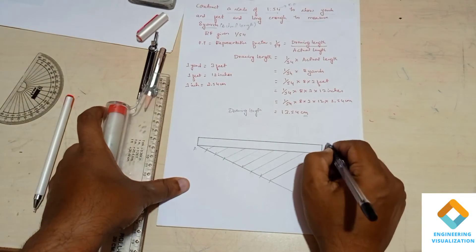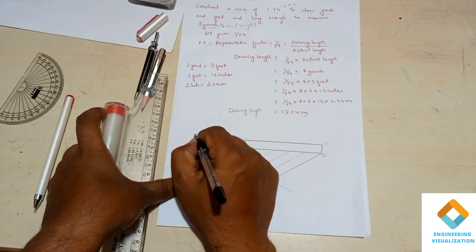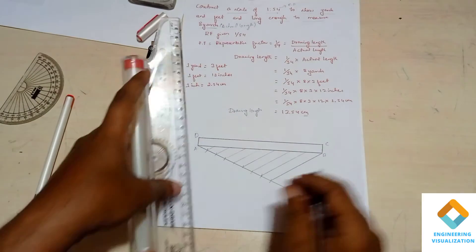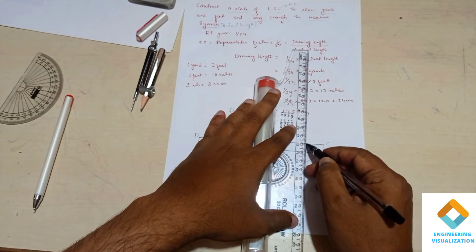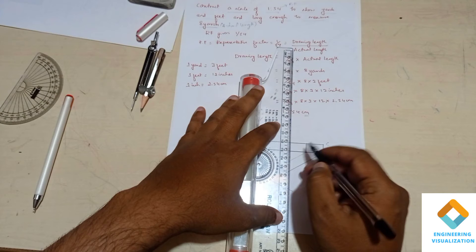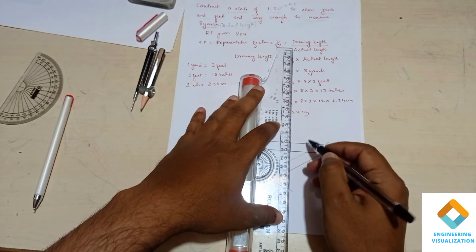Now you join so that it will become total 8 yards, that is dividing this scale into 8 equal parts. So draw the vertical line here.